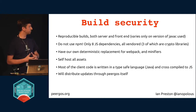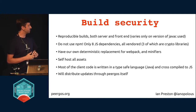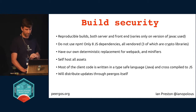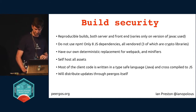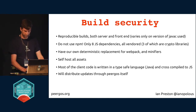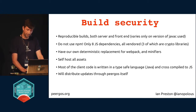Build security: we have reproducible builds both on the server and front end. We don't use NPM — we only have eight JavaScript dependencies, all of them vendored. Three of them are crypto libraries. We have our own deterministic replacement for Webpack and minifiers. We self-host all our assets, so there are no cross-domain requests to CDNs. Most of the client code is written in a type-safe language and cross-compiled to JavaScript.